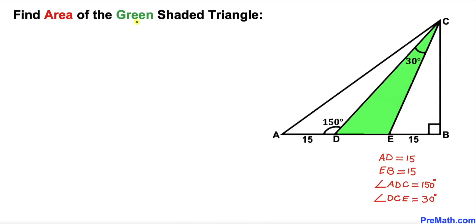Welcome to pre-math. In this video we have a green triangle CDE inside a right triangle ABC, such that angle ADC is 150 degrees, angle DCE is 30 degrees, line segment AD is 15, and line segment EB is 15 as well. We are going to find the area of this green shaded triangle.